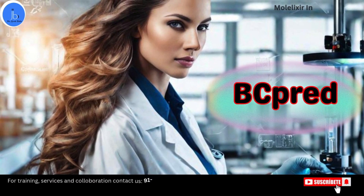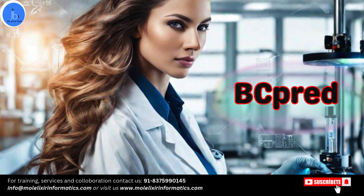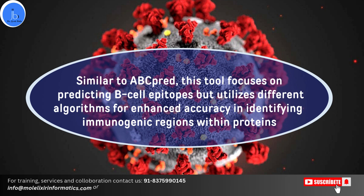The next one is BCPRED. It is similar to ABCPRED. This tool focuses on predicting B cell epitopes but utilizes a different algorithm for enhanced accuracy in identifying immunogenic regions within the proteins.